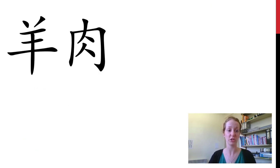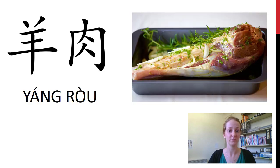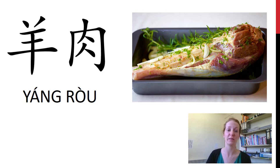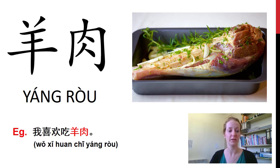下一个. 这是什么? 这是羊肉. 羊肉. So this is lamb — or it could even be goat meat, because 羊 can be a sheep or a goat. 羊肉. 我喜欢吃羊肉.